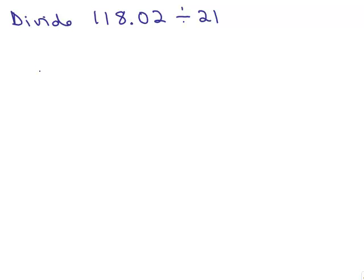For this problem, we do it similar. We just put the 21 into 118.02 and we just divide as usual. The only difference is, as long as this is a whole number here, we're going to put the decimal point right up there.